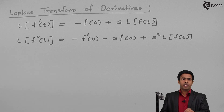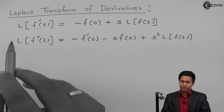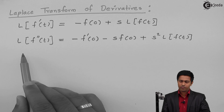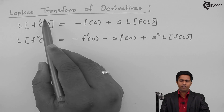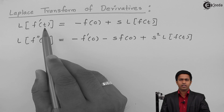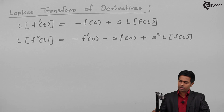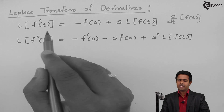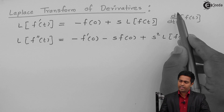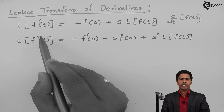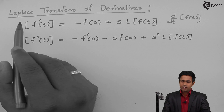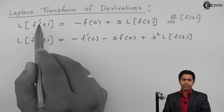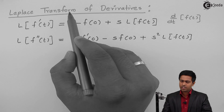So what is the Laplace transform of derivative? When we have Laplace of f'(t), or Laplace of f''(t), or Laplace of f'''(t) — f'(t) is nothing but the derivative of f(t) with respect to t. Similarly, the second order derivative of f(t) is called f''(t). Since we are finding the Laplace of a derivative of f(t), this property is called the Laplace transform of derivatives.